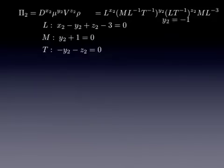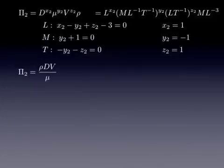You can see right off the bat, y1 equals minus 1. You can plug that into the third equation, and we get z2 equals 1. Those go into the first equation, and as you work through it, you'll find out that x2 equals 1. So we've got our solution to pi2. It's rho dv over mu.